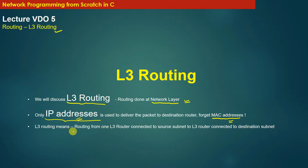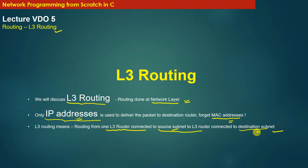Layer 3 routing means routing done from one Layer 3 router connected to the source subnet to a Layer 3 router connected to the destination subnet. L3 routing is all about routing a packet from one subnet to another subnet. In between these two routers there could be any number of Layer 3 routers, or there could be an internet. In this module we will learn what Layer 3 routes are, how to install and configure them in Linux virtual machines.